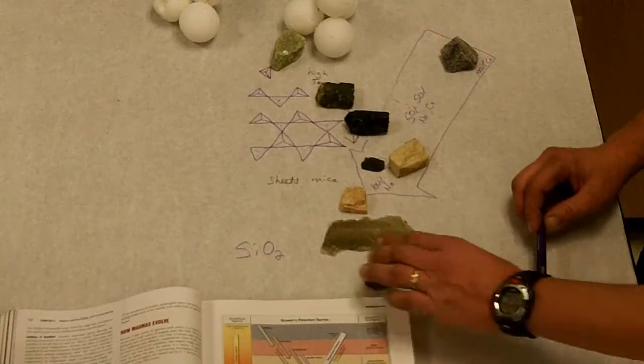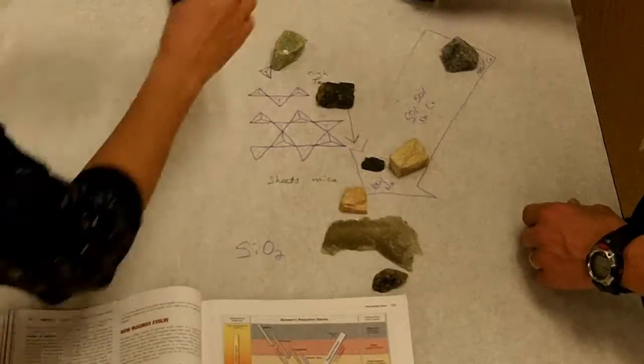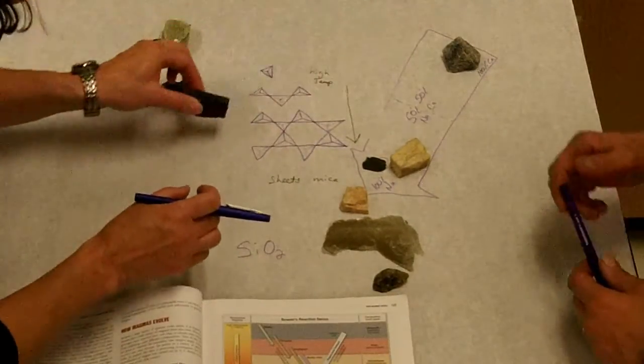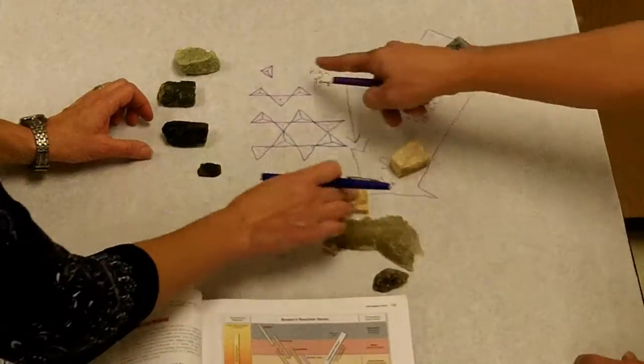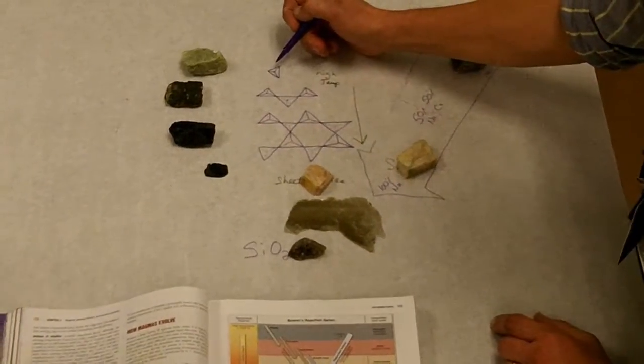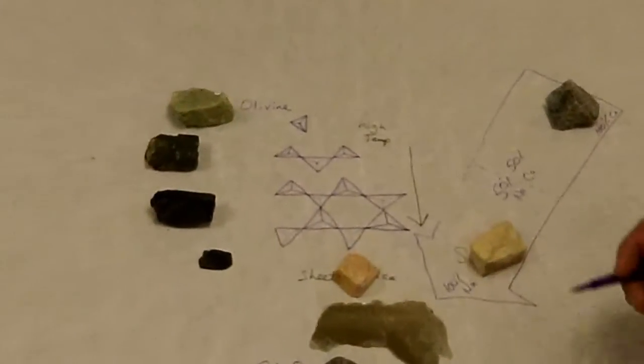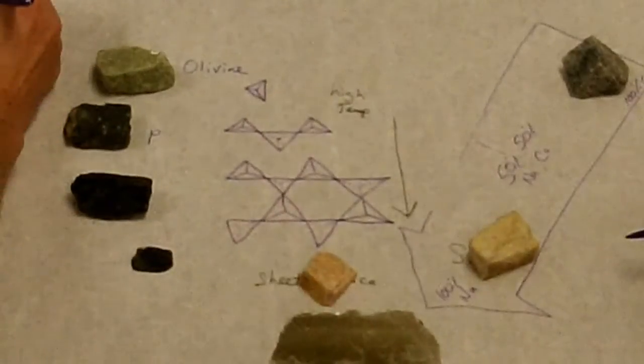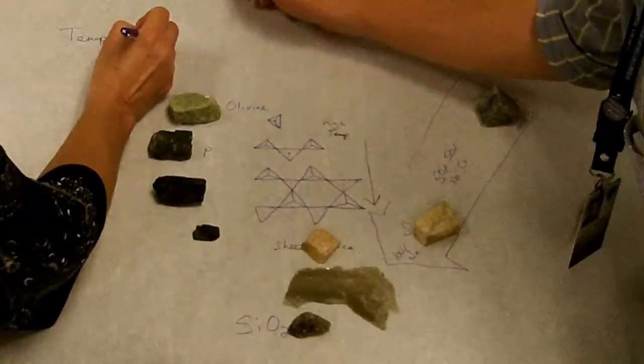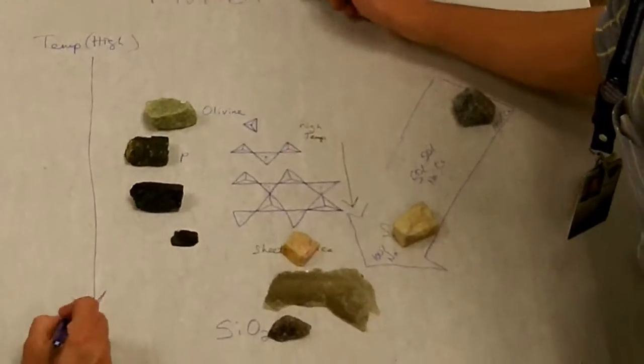So let's, should we draw out Bowen's reaction series here? Just to make sure we're good with this? Yeah, like a bigger version of this? Yeah, let's do that. Okay, we got this kind of right here. So let's move these guys out of here, and we can keep these over here. That'll work, right? Okay. So we've got our olivine over here showing the simple tetrahedron. And this would be the hottest temperature, right? Oh yeah, we could put temperature up here.